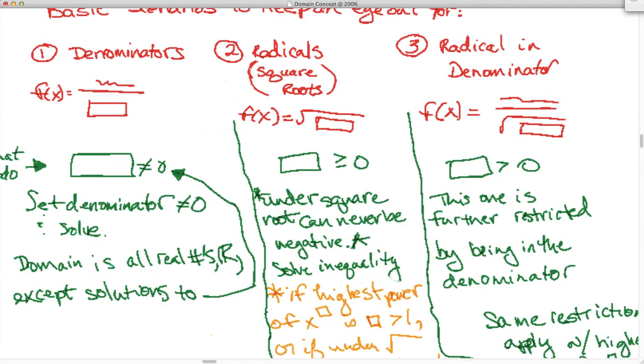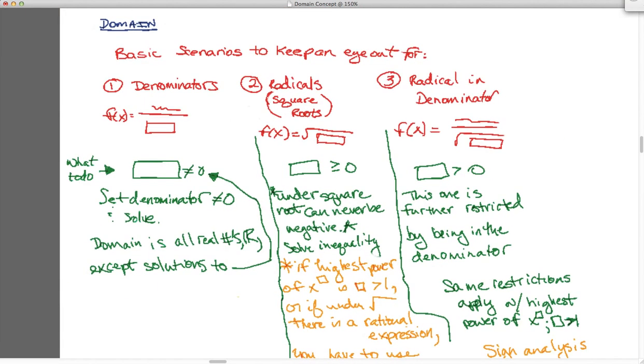I think I zoomed out a little too much, there we are. So the first scenario that we're going to look at is anytime we have a denominator. We know that that denominator, or you should know that